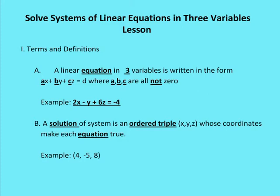That coordinate in space makes each of the equations true — it would be an intersection point of each of the three lines brought about by the three variables. So again, a linear equation in three variables is written in the form ax plus by plus cz equals d, where a, b, and c are all not zero. A solution of the system is an ordered triple whose coordinates make each equation true. And by the way, you don't have to have a solution — sometimes there's going to be no solution.